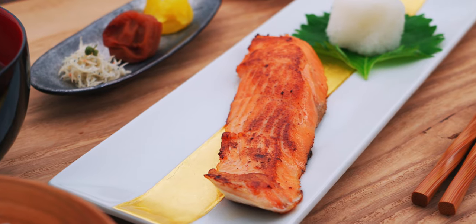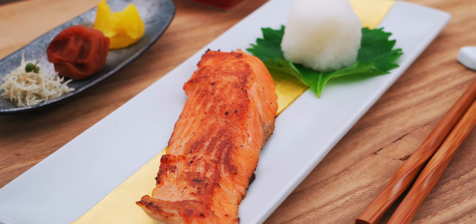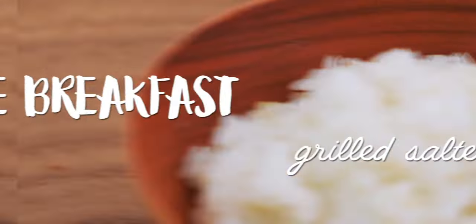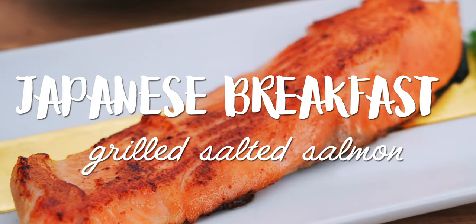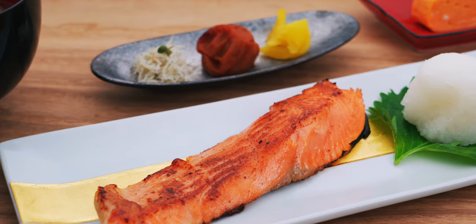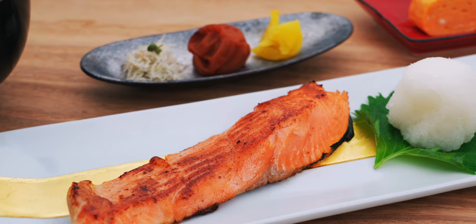Traditional Japanese breakfasts consist of a bowl of plain rice and miso soup accompanied by two or three side dishes. In this spread, I have a slice of salted salmon with some grated daikon as my primary side dish, and I also have some Japanese pickles and tamagoyaki.